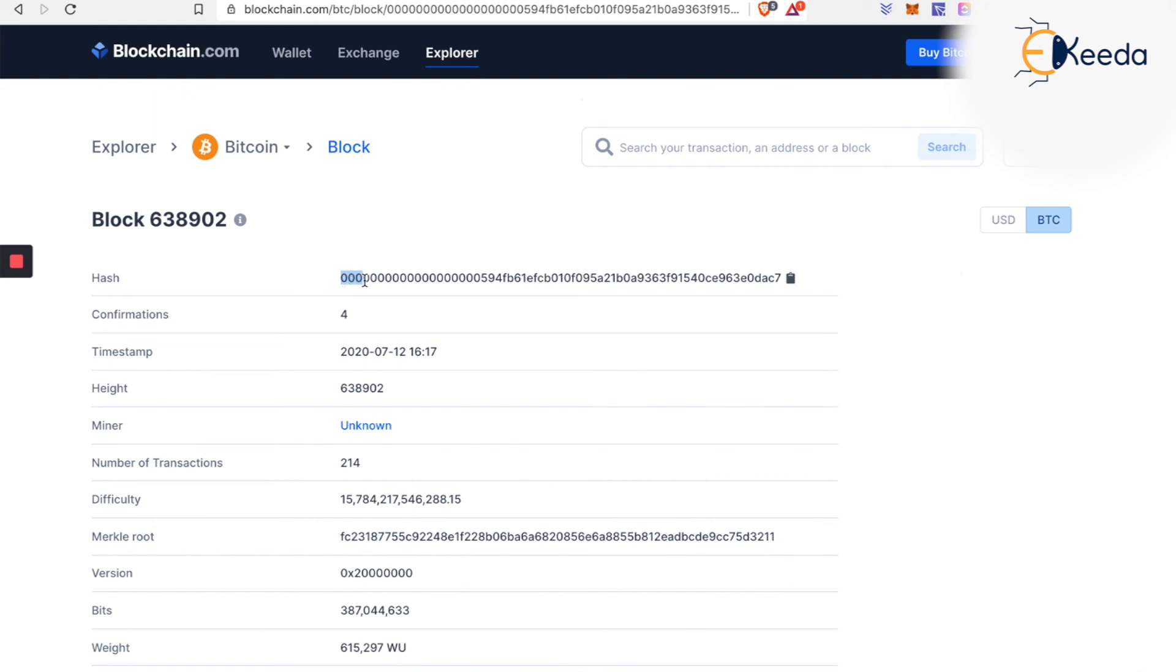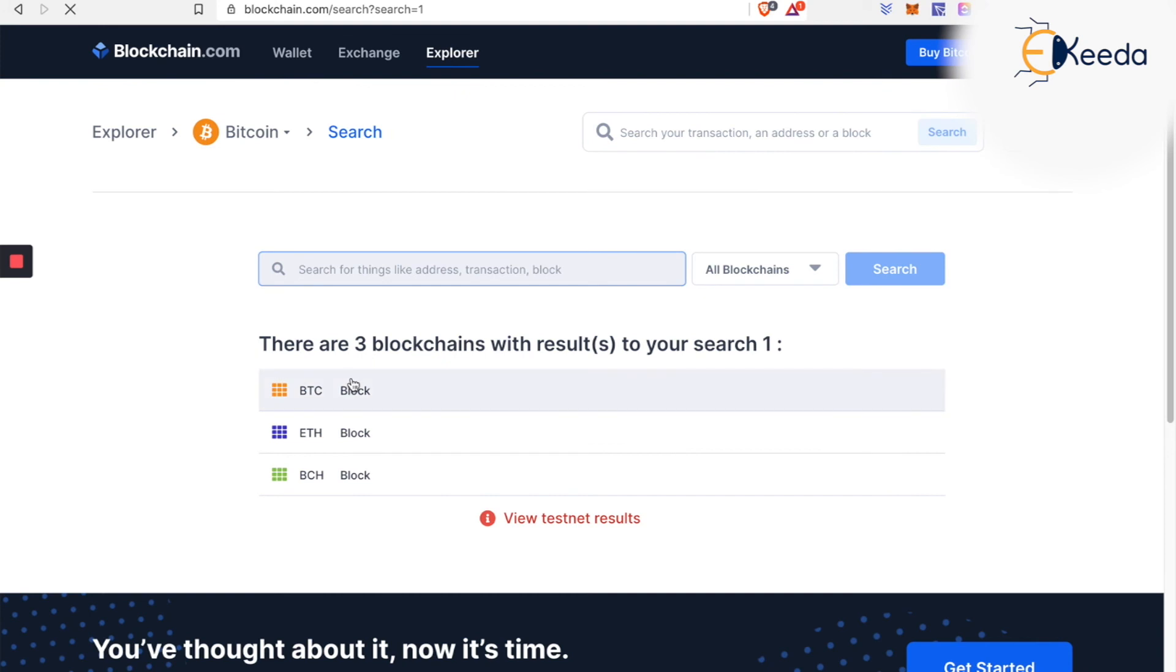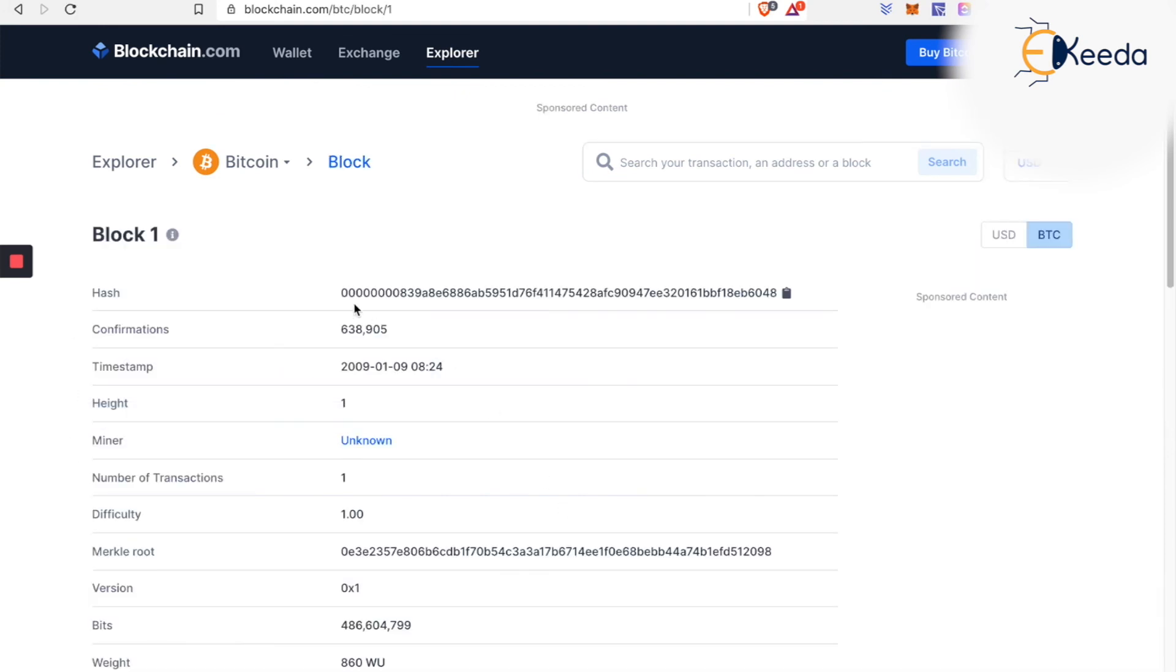I will just count the number of zeros: 8, 9, 10, 11, 12, 13, 16, 17, 18, 19, about 20 zeros. So 20 zeros is the difficulty now, which means clearly it has increased. And let's go to the first block, the Genesis block as we saw. If you go to this first block of Bitcoin, you can see that there are only 1, 2, 3, 4, 5, 6, 7 and 8 zeros. From that time, because of the factors like competition, increase in computing power, etc., you have increased the difficulty of mining in the Bitcoin ecosystem itself.